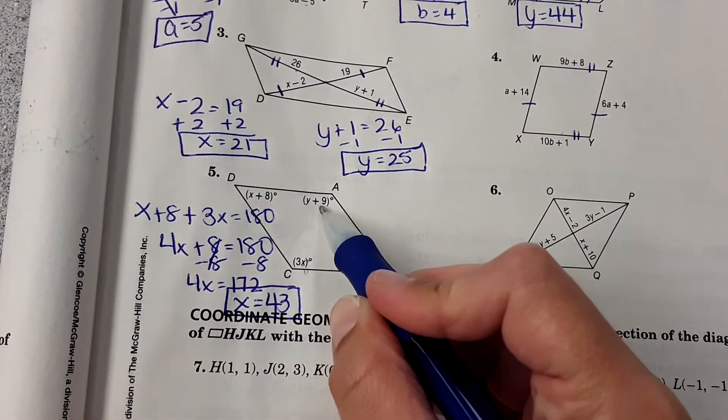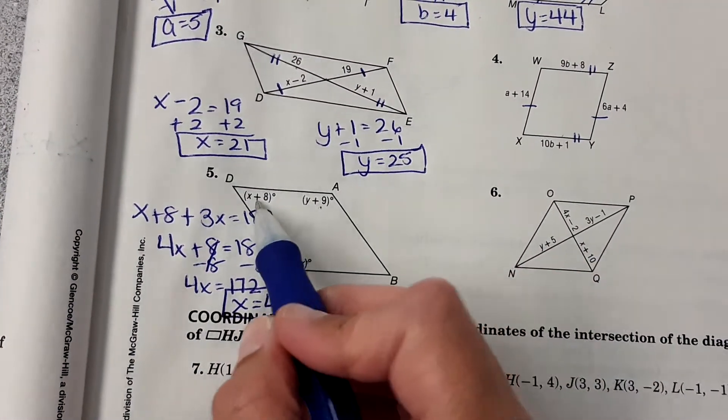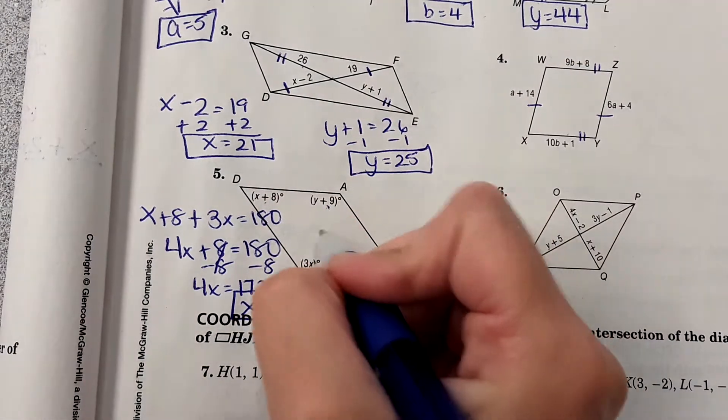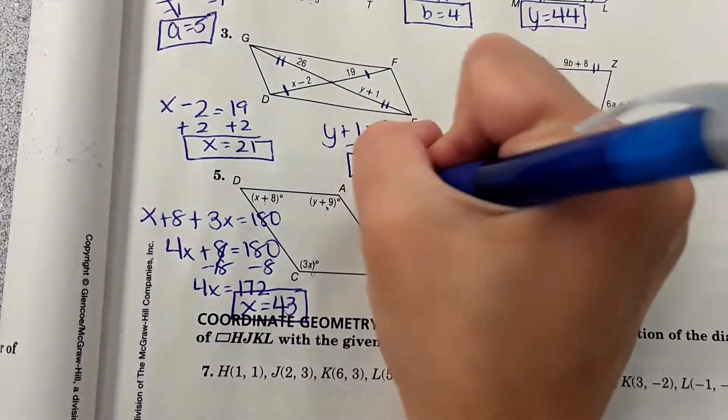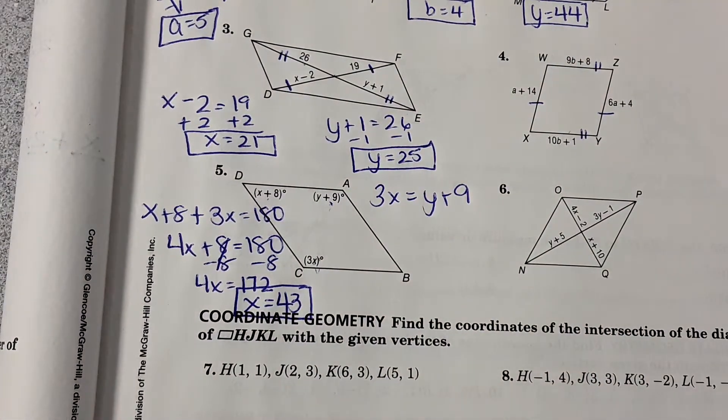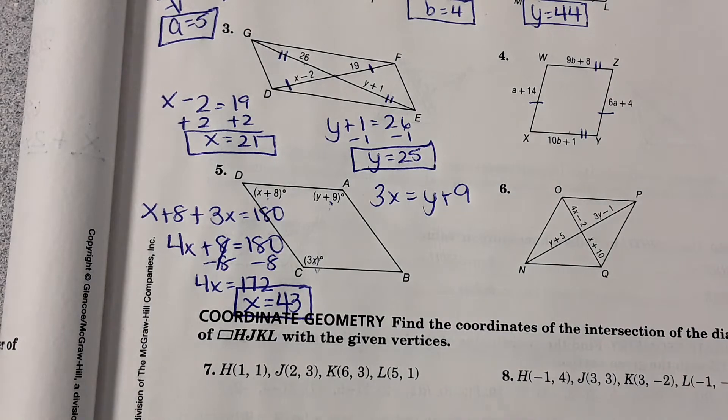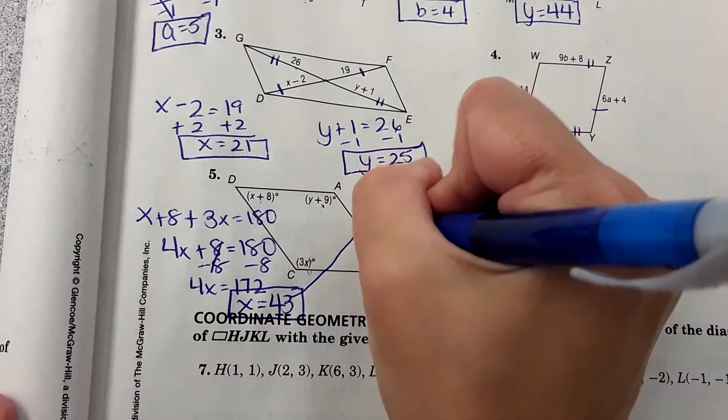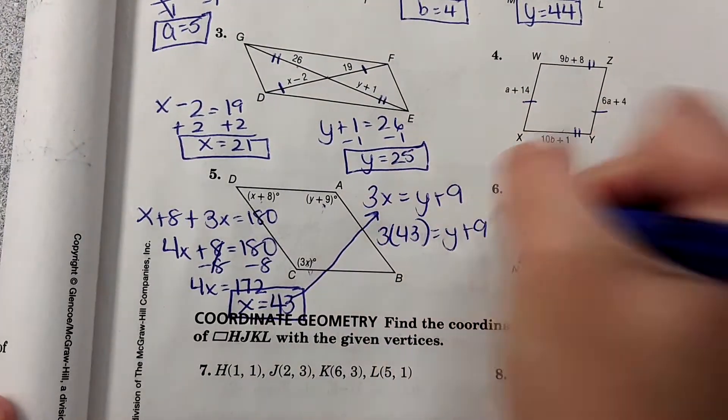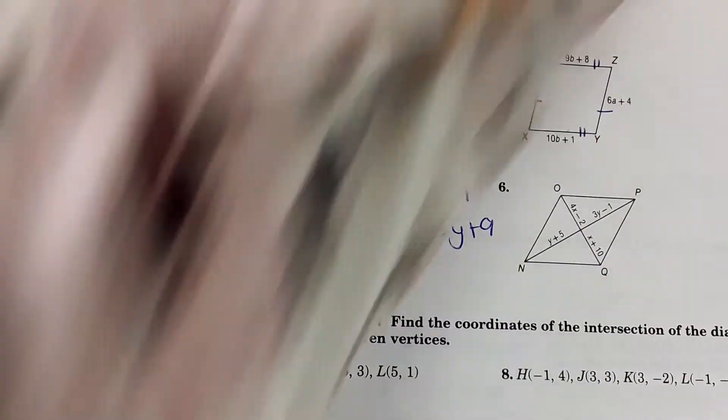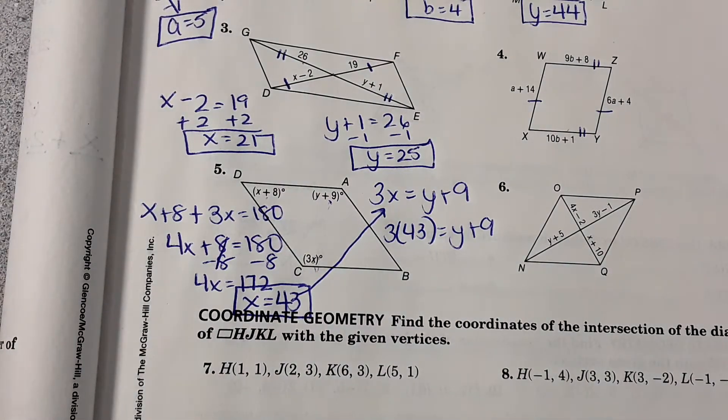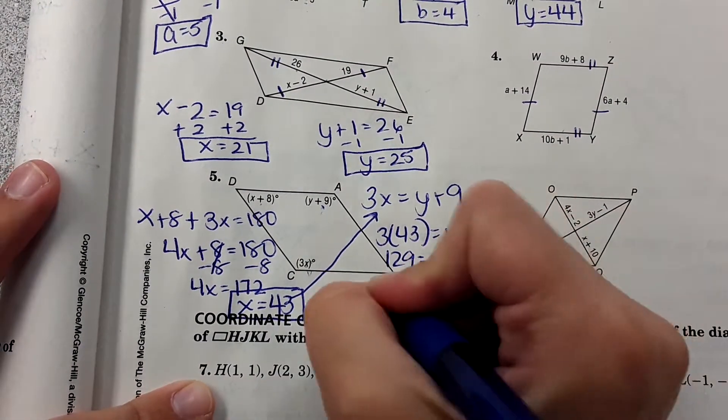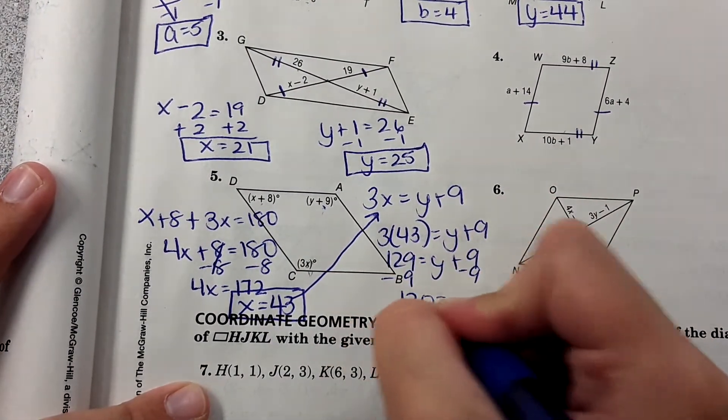I could set these two equal, so I could set these two equal and solve for y, or I could say this plus this is 180 and solve for y that way. It's up to you which one you want to do. Maybe I'll set these two equal: 3x equals y plus 9. X equals 43, so I'm going to plug that in for x: 3 times 43 equals y plus 9. 129 equals y plus 9, y equals 120.